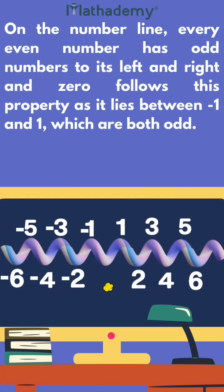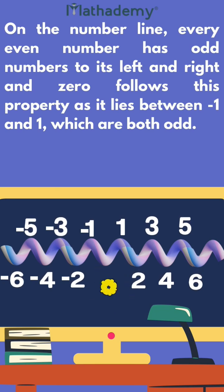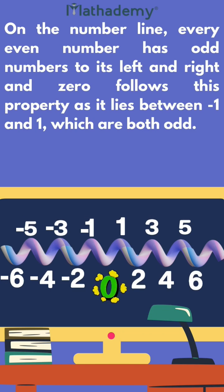On the number line, every even number has odd numbers to its left and right, and 0 follows this property as it lies between -1 and 1, which are both odd.